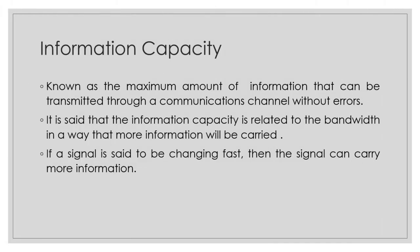Moving on to the next concept, we have information capacity. Information capacity can be defined as the maximum amount of information that can be transmitted through a communication channel without errors. Based on that definition, information capacity is not only about the amount of information being transmitted, but it is also about the overall efficiency of transmitting messages through a communication channel — hence the phrase 'without errors.'